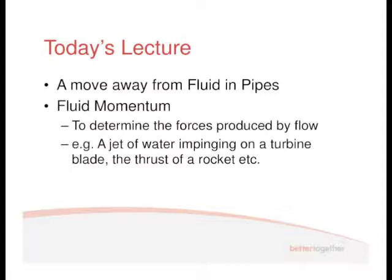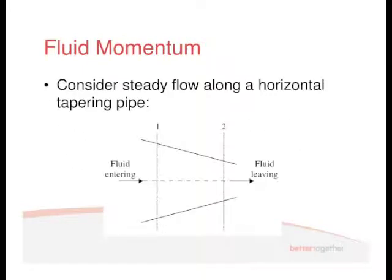If we consider a flow along a horizontal tapering pipe — there's point one and point two — fluid going in, fluid coming out. We know that continuity applies: there's no flow coming in to the sides, so V dot is constant. And if we assume that the density is constant, then we also know that M dot, mass flow rate, is constant. M dot is important to know in this work.